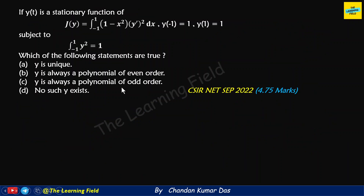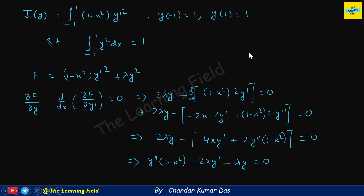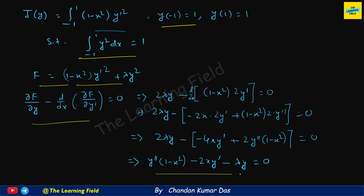Now for the next question: if y(t) is a stationary function of G[y] equal to the given functional subject to the given constraint, which of the following statements is true? We can apply the Lagrangian function: form capital F equal to the integrand plus lambda times g, then apply the Euler-Lagrange equation. I calculate the Lagrangian and apply the final equation to get the governing equation.